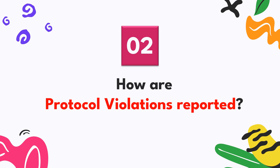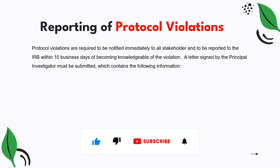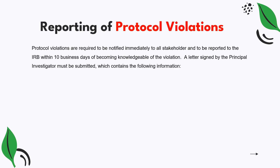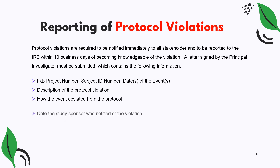Protocol violations are to be notified immediately to all stakeholders, although formal reporting can follow within 10 business days. They must be reported to the IRB or ethics committee within 10 business days from becoming knowledgeable of the violation. A letter from the principal investigator is required, containing the project number, subject ID, date and event of the deviation, a clear description of the violation, and how it occurred.